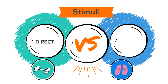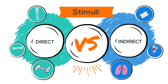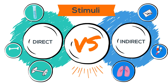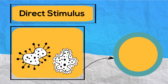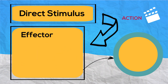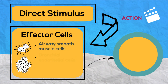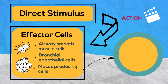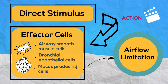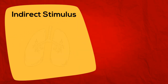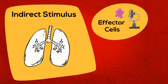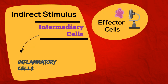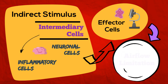Let's take a look at direct and indirect stimuli to evaluate hyper-responsiveness. A direct stimulus causes airflow limitation by a direct action on effector cells, such as airway smooth muscle, bronchioendothelial, and mucus-producing cells, thus limiting airflow. An indirect stimulus causes airflow limitation by an action of cells other than the effector cells, such as inflammatory cells and neuronal cells, which then interact with the effector cells, limiting the airflow.